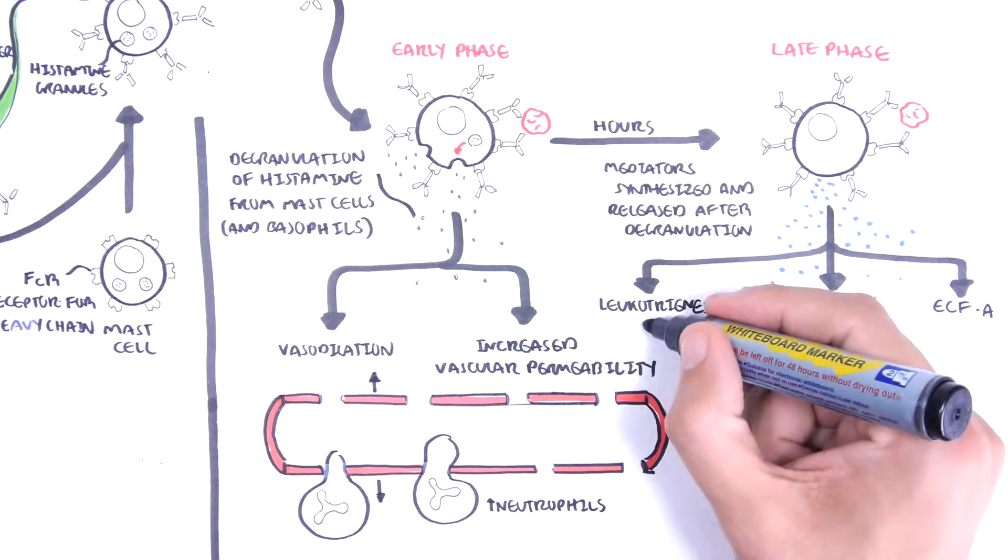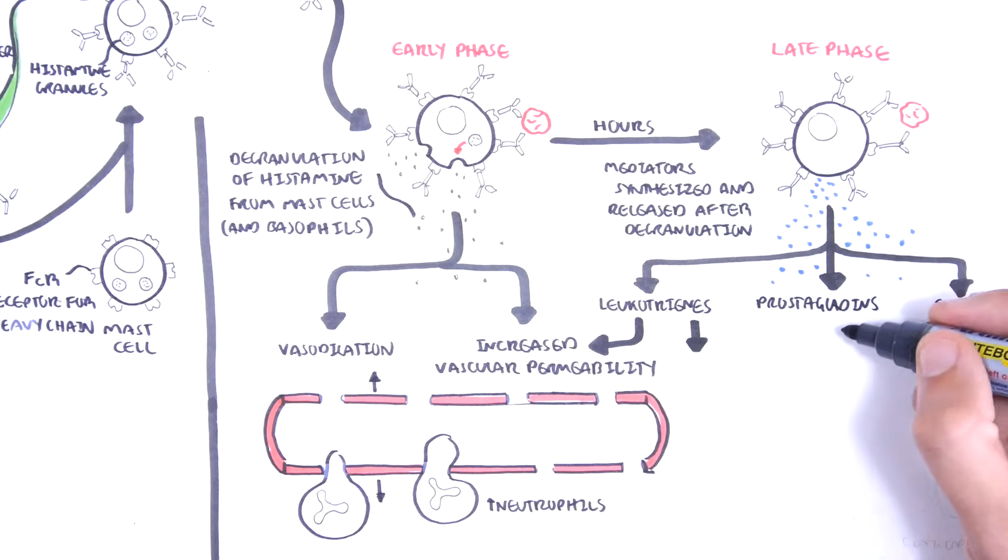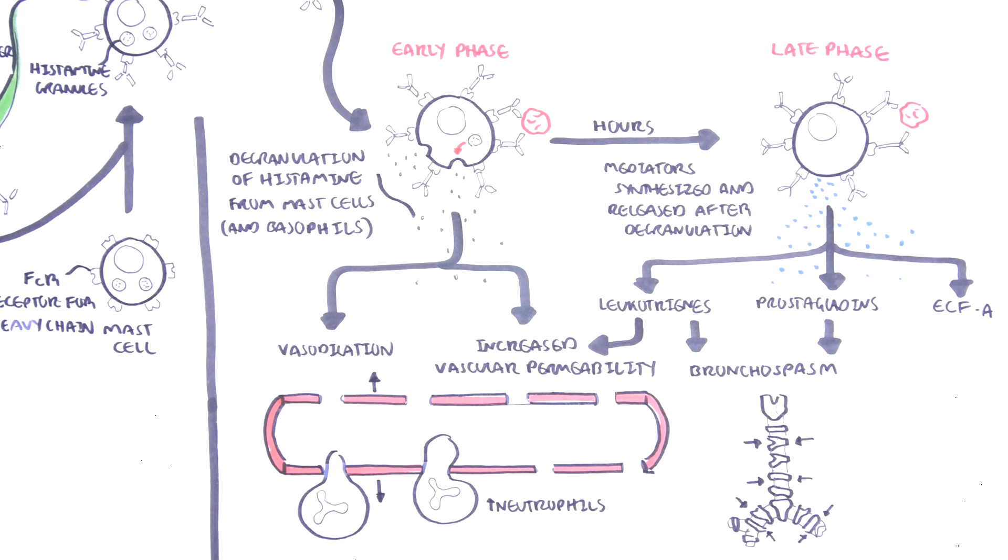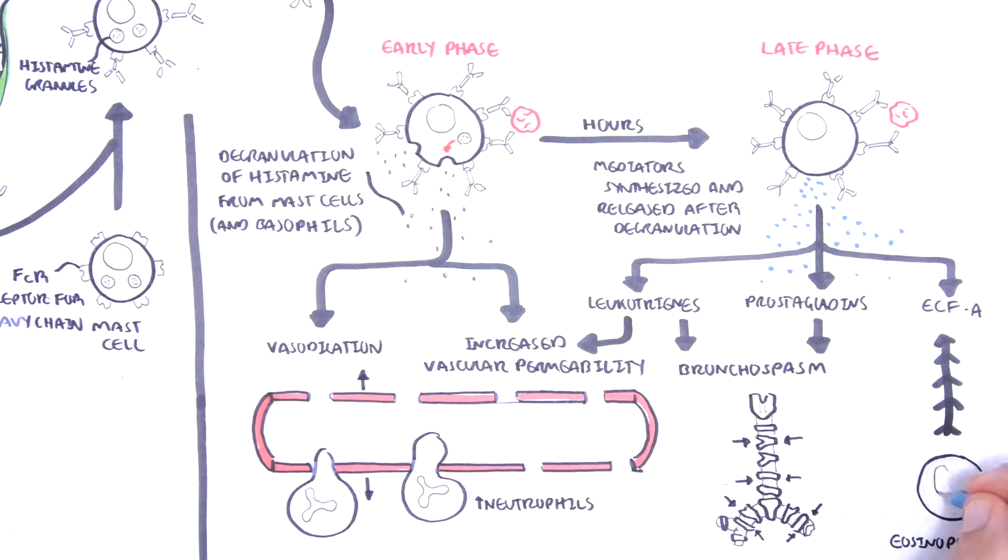Leukotrienes causes increased vascular permeability and bronchoconstriction. Prostaglandins causes bronchoconstriction. Eosinophil chemotactic factor of anaphylaxis attracts eosinophils to tissues immediately.